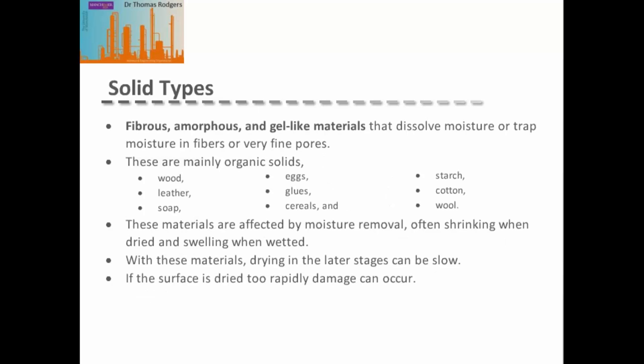The second type is fibrous, amorphous, and gel-like materials, which dissolve or trap moisture in fibers or very fine pore structures — mainly organic solids such as wood, leather, cotton, and starch. These materials are affected by moisture removal and often shrink when dried or swell when wetted. Because moisture is trapped inside, drying in later stages can be very slow, and if the surface dries too rapidly, damage can occur to the solid.